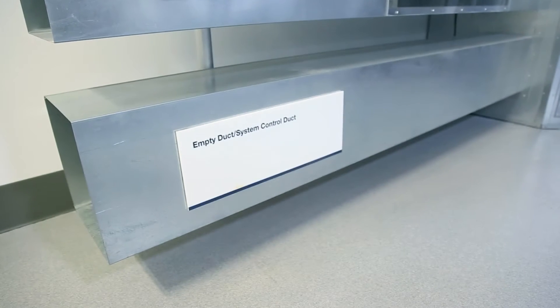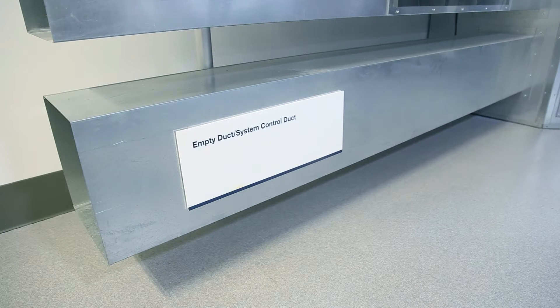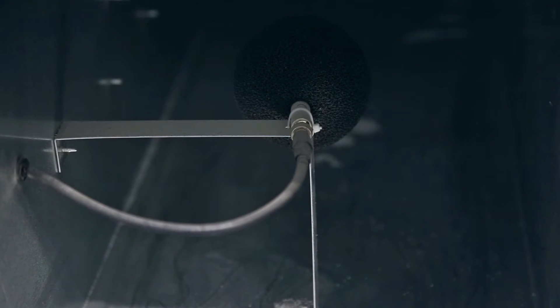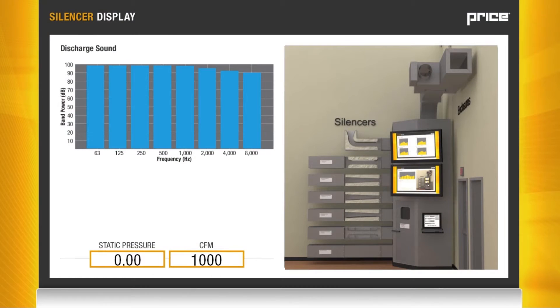We will start with measuring the sound source through the empty duct. This will give us our base sound level for all of the tests and there's a microphone at the end of the duct capturing the sound measurement. You can see on the graph that the sound source is relatively constant in all octave bands for the empty duct sound measurement. The pressure drop is also measured at 0 inches of static pressure as there is nothing in the airstream.